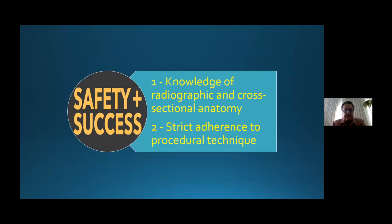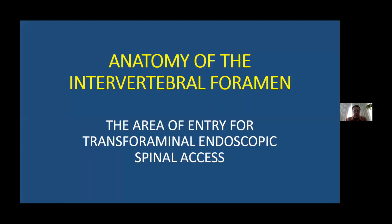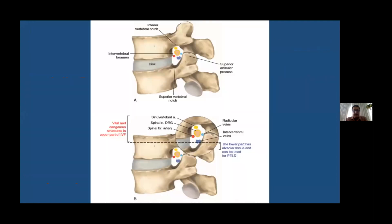For safety and success, we need knowledge of radiology, anatomy, and cross-sectional anatomy. We must also have strict adherence to the procedural technique. For the transforaminal approach, we must know the anatomy of the intervertebral foramen, which is the area of entry for endoscopic spinal access, and especially the anatomy of the Kambin's triangle system.